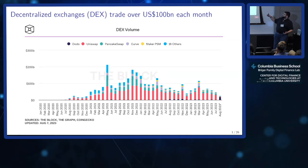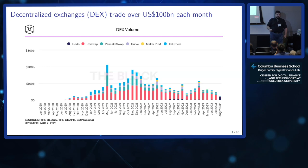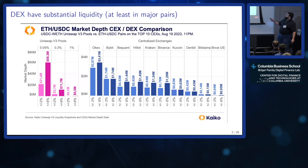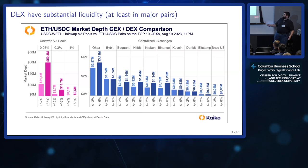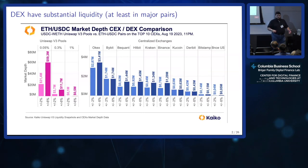Decentralized exchanges are increasingly important in the crypto space. They trade over a hundred billion dollars each month, with peaks going up to 200 billion or more. The dominant decentralized exchange is Uniswap. Not only are they big, but they're also quite liquid, at least in the pairs that matter. A recent study from August by Kyco shows that for USDC against ETH, the depth on Uniswap around the midpoint is roughly ten times larger than on most centralized exchanges.